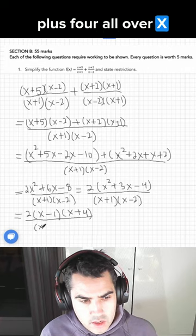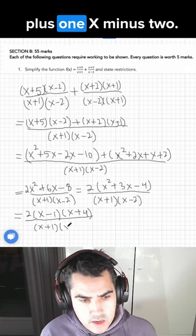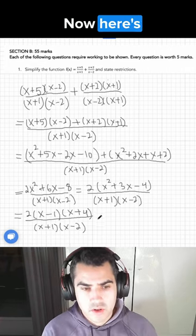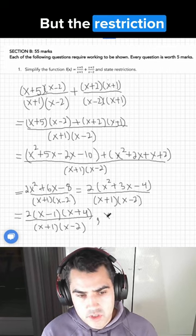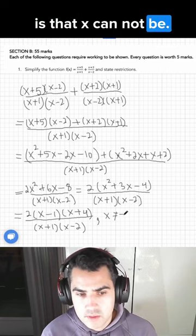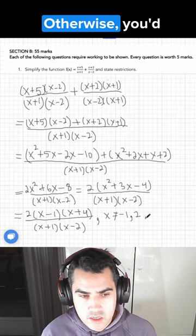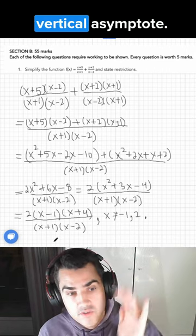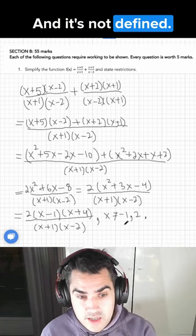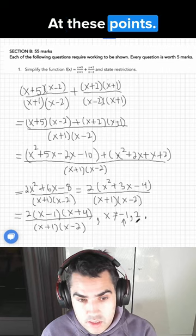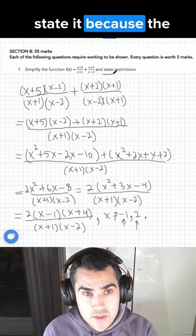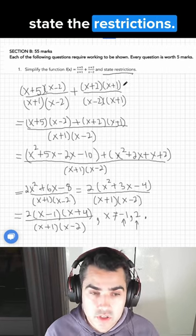All over x plus 1, x minus 2. Now here's our answer. But the restriction is that x cannot be minus 1, nor can it be 2. Otherwise, you'd be dividing by 0. And that will make a vertical asymptote. And it's not defined at these points. And you have to state it because the question says to state the restrictions.